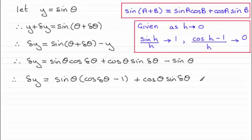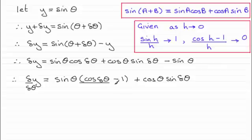The next thing I'm going to do is divide both sides by delta theta. So I get delta y divided by delta theta equal to the first term divided by delta theta — I can write it over delta theta — and for the second term, dividing by delta theta is the same as dividing that factor by delta theta.